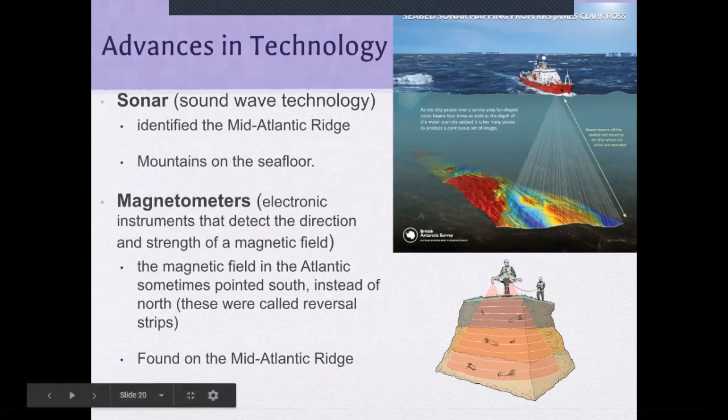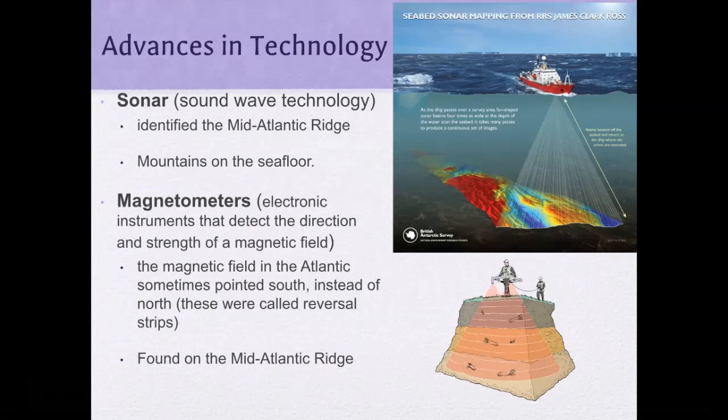Advances in technology — sonar, for example — have also helped support Wegener's theory. They identified a mid-Atlantic Ridge and mountains on the sea floor. Whatever is underneath the ocean actually matched what we saw above ground. If there's mountain formation happening underwater as well, then the sea floor must be moving.